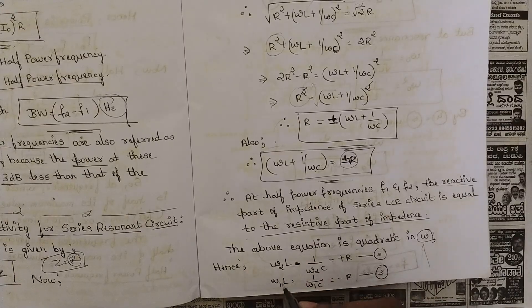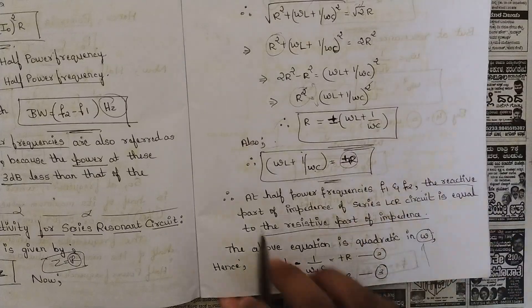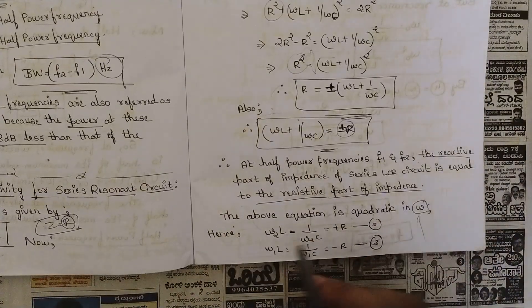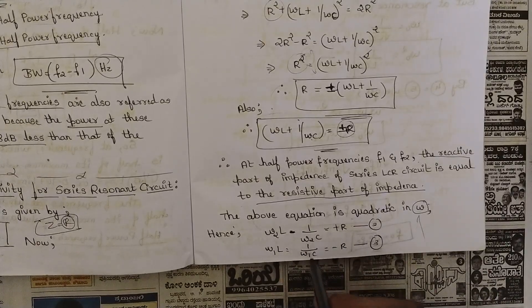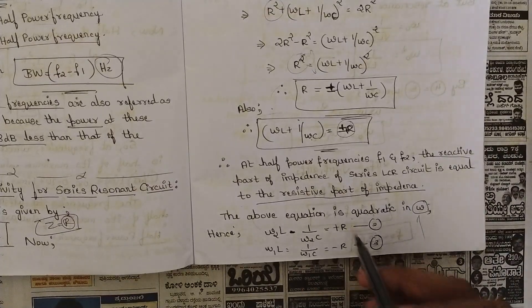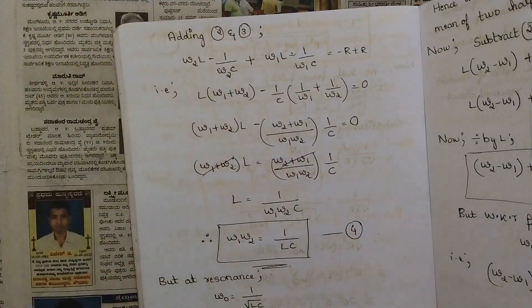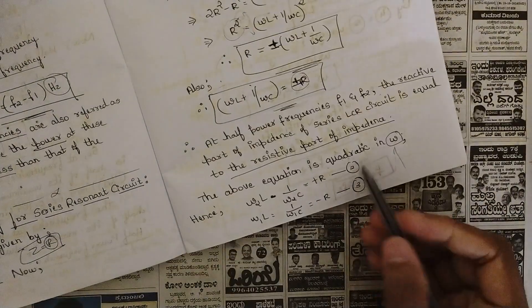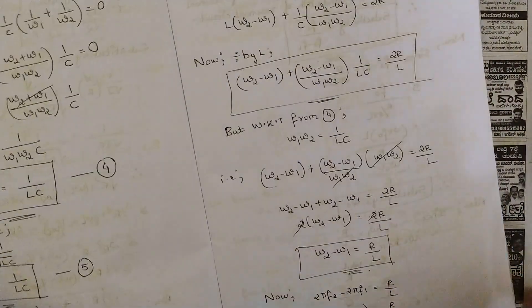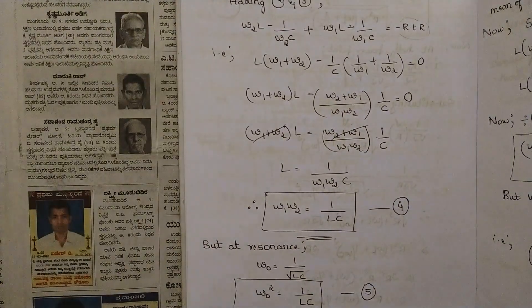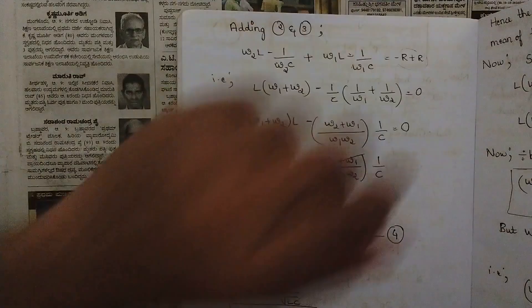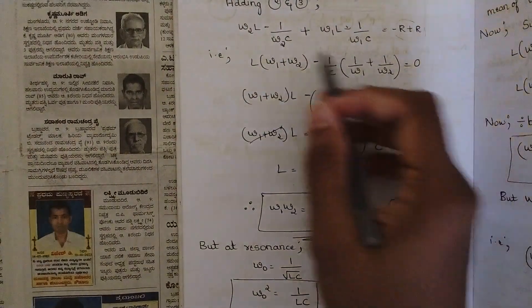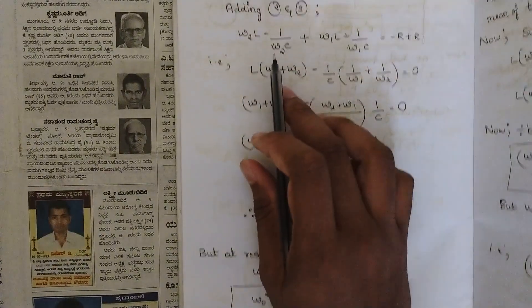Since we have two resistance values — +R and −R — we write two separate quadratic equations: ω₂L − 1/(ω₂C) = +R (Equation 2), and ω₁L − 1/(ω₁C) = −R (Equation 3). First, let us add Equations 2 and 3. We add them in order to cancel the resistance terms, since one has +R and the other has −R, leaving an equation only in terms of ω.